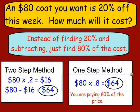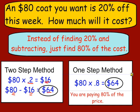Let's take this $80 coat example. The two-step method would be to find 20% of 80 — you convert 20% into a decimal. So you would be saving $16. You then take the original cost and subtract $16, and you'd pay $64 for the coat. So that's the two-step method: finding the amount of the discount and then subtracting the discount.